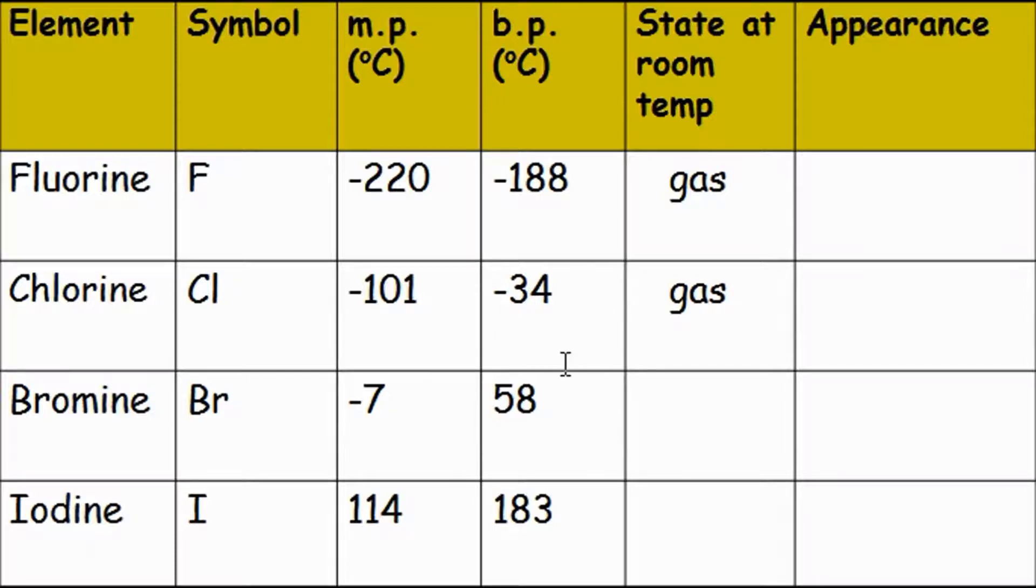What about bromine? It melted at minus 7, but at 58 degrees C, that's higher than room temperature. So at 20 degrees C, it has not boiled yet. If something has melted into a liquid but not boiled into a gas, it must still be in its liquid form. Finally, for iodine, it melts at 114, boils at 183, so it hasn't even melted yet. If something hasn't even melted yet, then we know it is in a solid state.